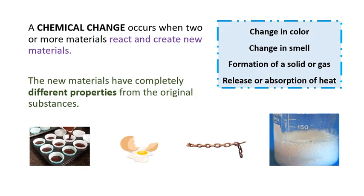On the other hand, a chemical change occurs when two or more materials react and create new materials. There is always a reaction, and they are always producing new materials. The new materials have completely different properties from the original substance.